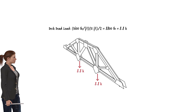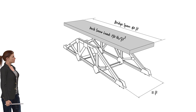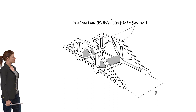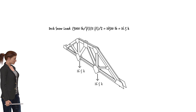We can distribute the snow load to the bottom joints of each truss in a similar manner. First, we transfer the deck's snow load to the cross beams as uniformly distributed loads. These loads can then be transferred to the truss joints. Each joint takes half of the total load on the beam. In this case, the load per joint equals 16.5 kips.